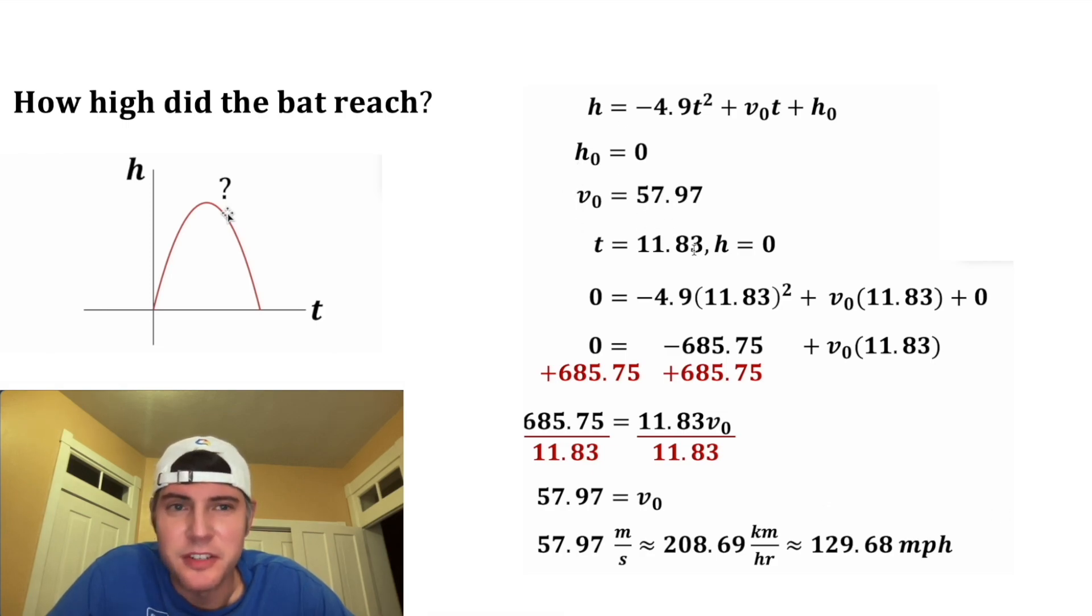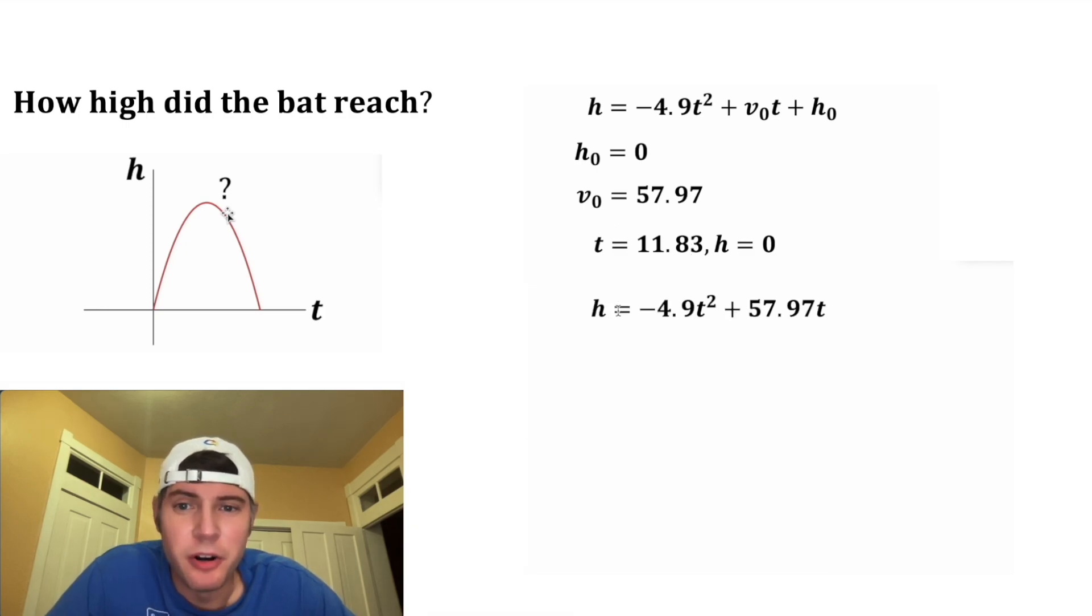We can update the initial velocity up here to 57.97, and now we don't need this stuff anymore. Now that we know our initial velocity, here's our new equation representing the height. So now to find this maximum height, we first need to plug in this point right here.